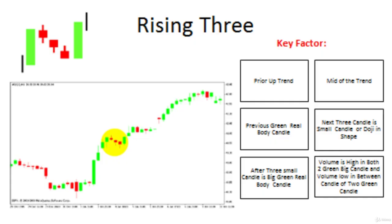Now we discuss another pattern, which is a continuation pattern in three candlestick patterns. The pattern name is rising three. As the pattern shows on your screen, there is a set of five candles. The first candle is a big green real body candle with very high volume. After that green candle, there is a set of three red or doji-kind of candles which run parallel, flat, or opposite to the direction of the green candle. All three candles are formed with low volume.